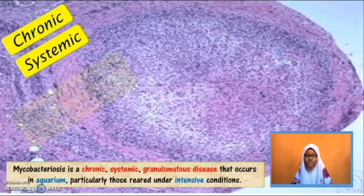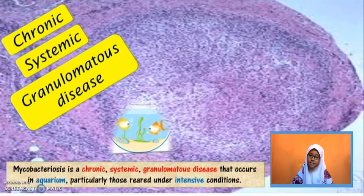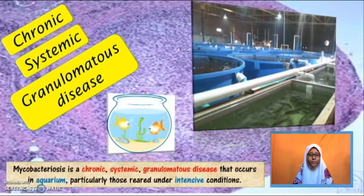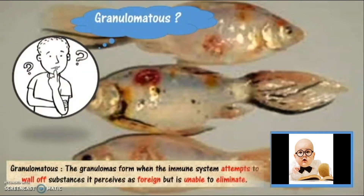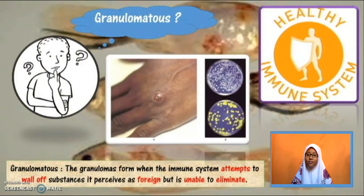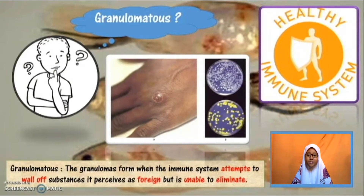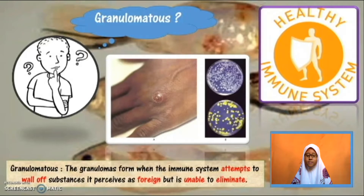Mycobacterium is a chronic, systemic, granulomatous disease that occurs in aquarium, particularly those raised under intensive conditions. Granulomatous means the granulomas form when the immune system attempts to wall off substances it perceives as foreign but is unable to eliminate.